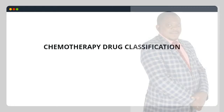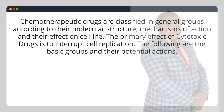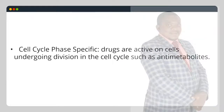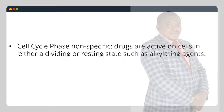Chemotherapy drug classification. Chemotherapeutic drugs are classified in general groups according to their molecular structure, mechanisms of action and their effect on cell life. The primary effect of cytotoxic drugs is to interrupt cell replication. Cell cycle phase specific drugs are active on cells undergoing division in the cell cycle, such as antimetabolites. Cell cycle phase non-specific drugs are active on cells in either a dividing or resting state, such as alkylating agents.